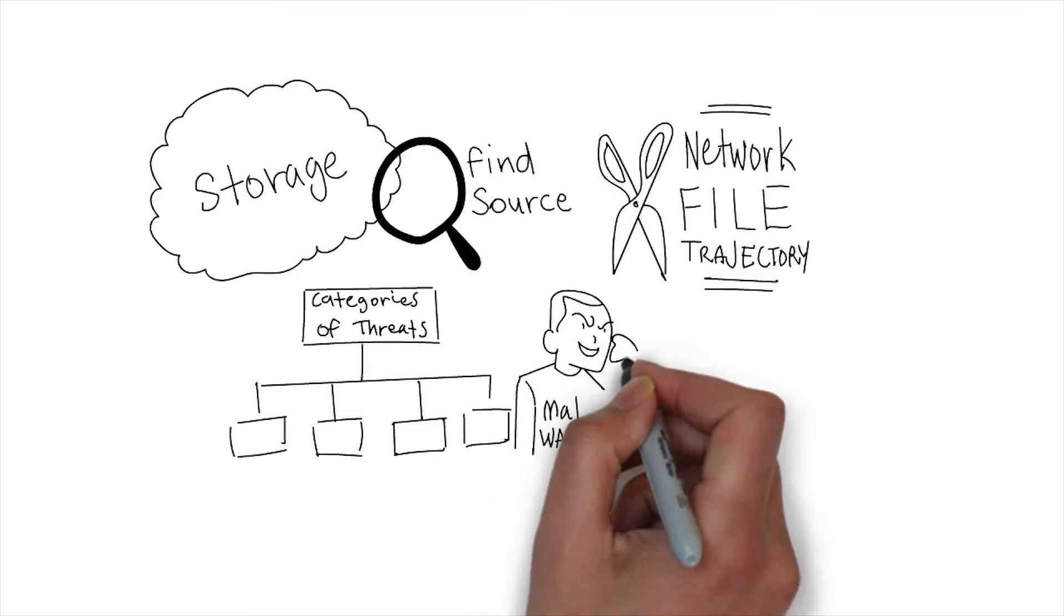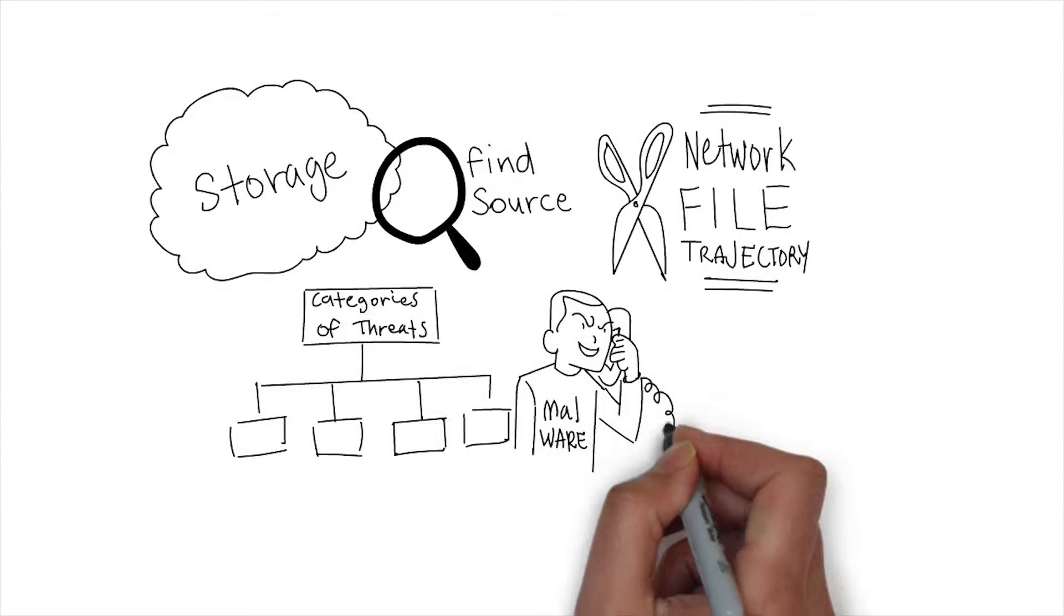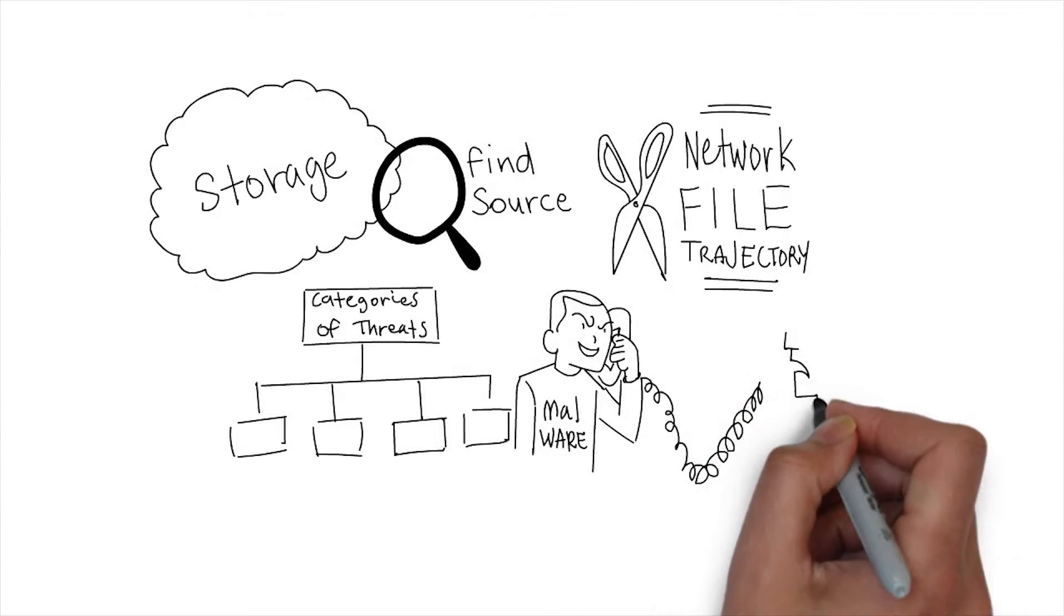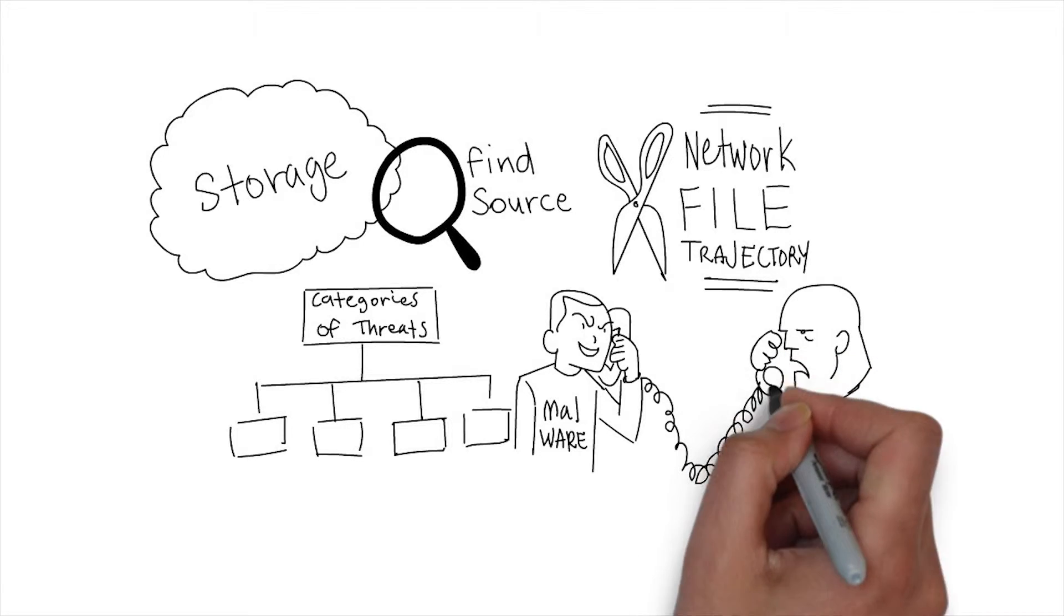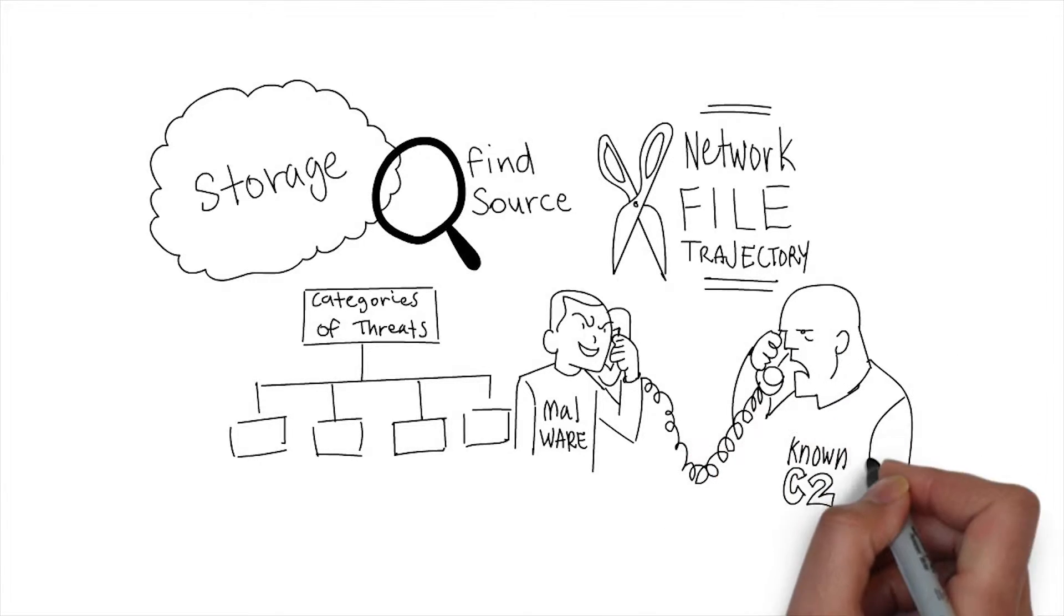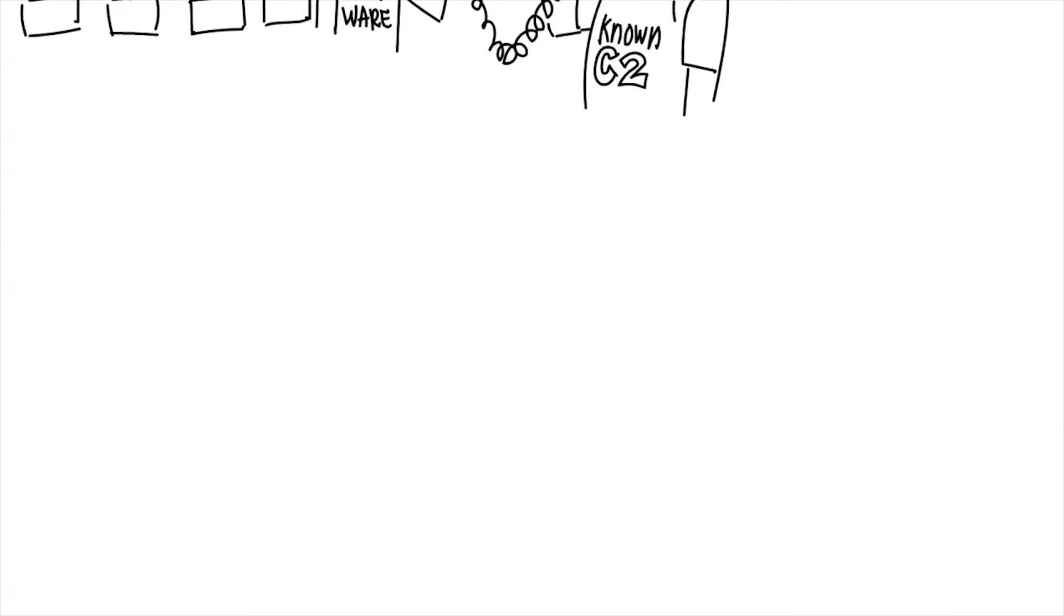If I see these, for example communication or an intrusion event where malware communicated with a known C2 command and control server, well now I have a problem. That's a tier one event that I need to deal with.